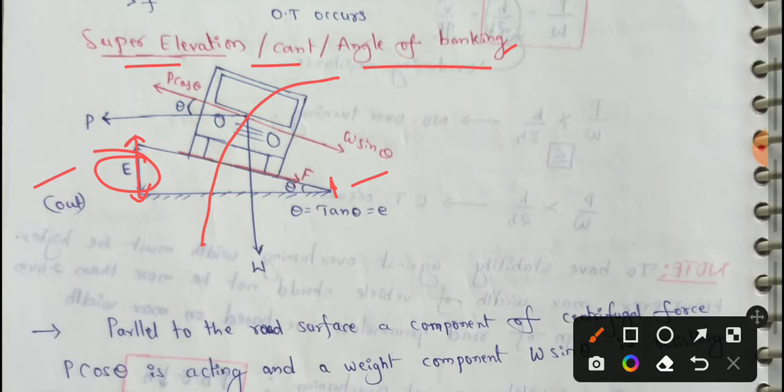This is the total super elevated height of the outer edge with respect to the inner edge. Next, Theta. Theta means e as a super elevation firm. That is the same thing. Theta equal to tan theta equal to e. e means rate of super elevation.